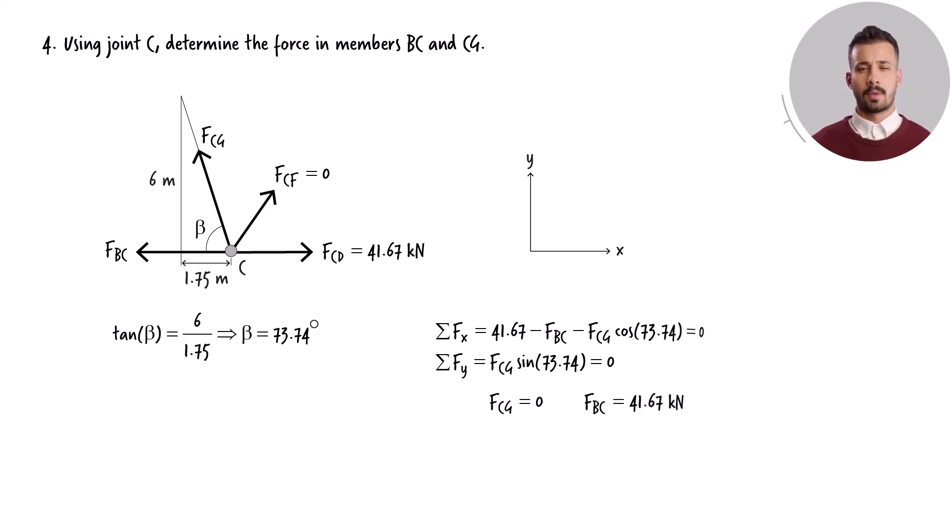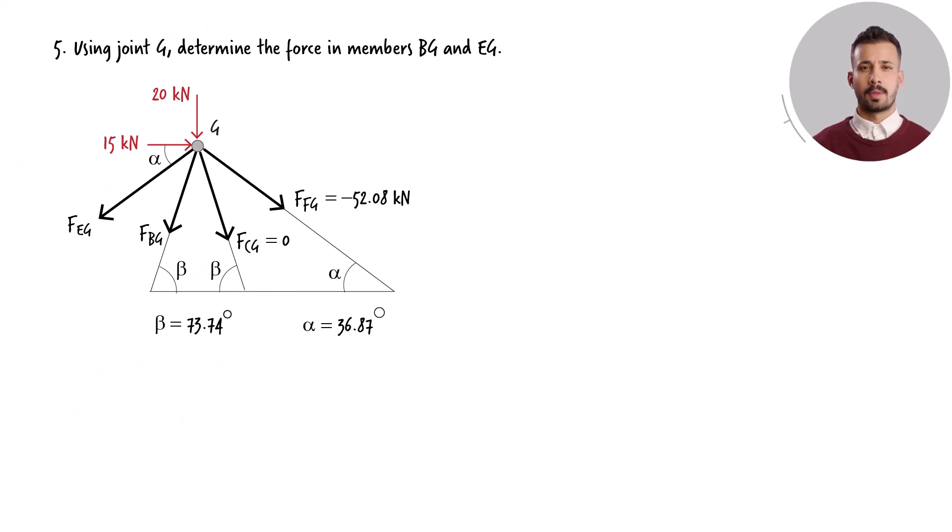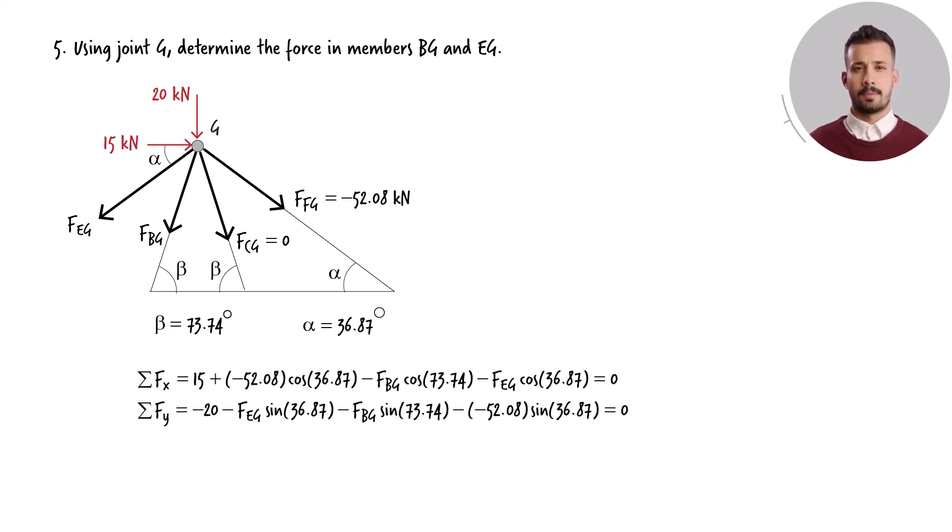Next, we examine joint G. Two unknown member forces are present at this joint: FEG and FBG. Here are the equilibrium equations for the joint. Solving them simultaneously for the two unknown forces, we get.